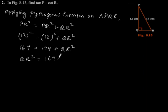First let us write 169 minus 144, which equals 25, which gives QR equals square root of 25, which equals 5 centimeters. So QR is 5.